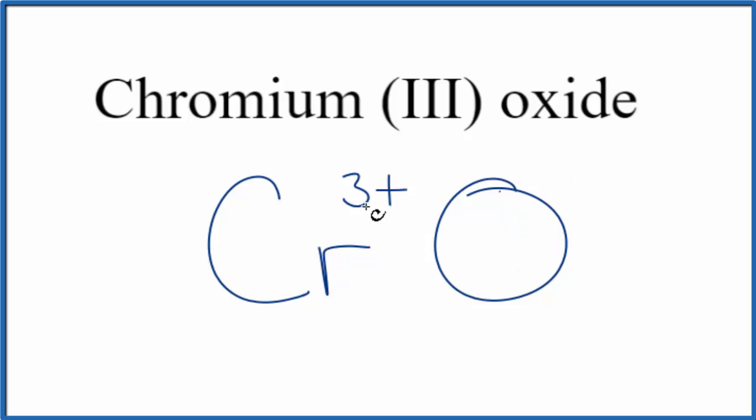So chromium, we know that's three plus, because it tells us right in the formula here. Oxygen on the periodic table's in group sixteen, sometimes called 6A, it's always going to be two minus. So we need these charges to balance out, to add up to zero, have a net charge of zero.